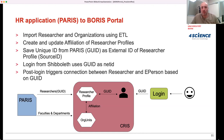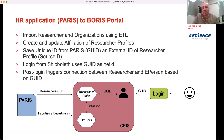We also had to synchronize information from the human resources database called PARIS. From PARIS, we import researcher information and the faculties and departments into DSpace-CRIS, where they become researcher profiles and organization units. This is done mainly using an ETL transformation done using Pentaho, which takes the data from PARIS, transforms it into the Excel format used by the standard import framework of DSpace-CRIS. In this way, we import and update the information from the human resources database every day.